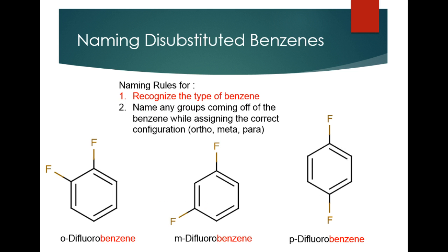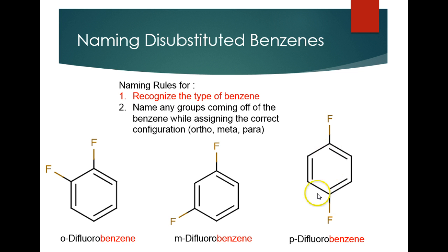Let's go over disubstituted benzenes. It's still a benzene even though we have two substituents coming off of it. Instead of using numbers when we only have two substituents off a benzene ring, we're going to use letters that stand for ortho, meta, and para — these stand for the positions they're in. For ortho, they have to be right next to each other. For meta, it's a 1-3 formation, so we skip one. And para means they're right across from each other, so it's a 1-4 formation.